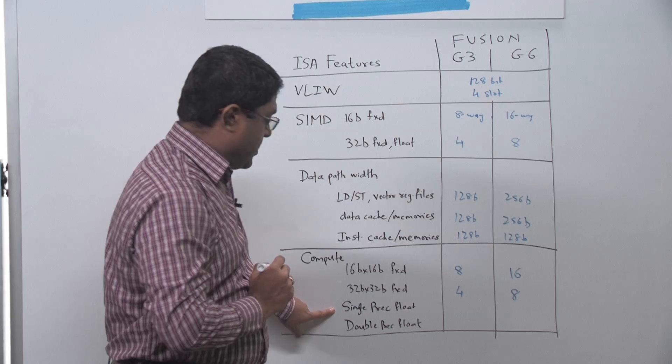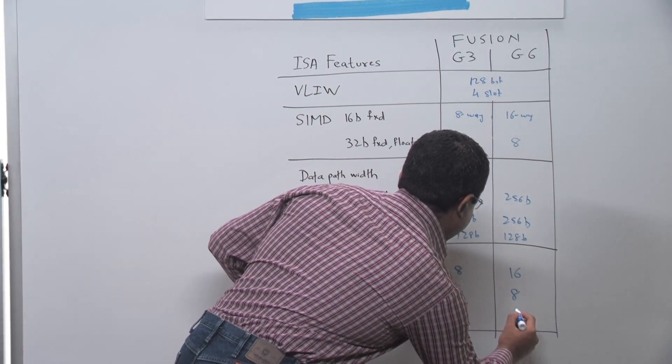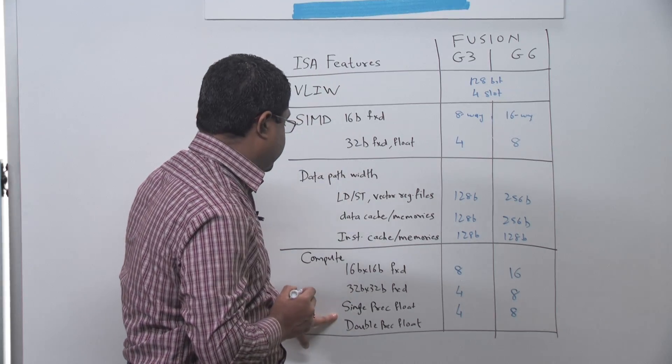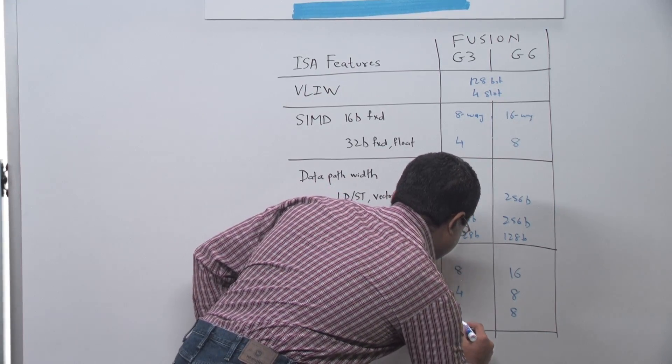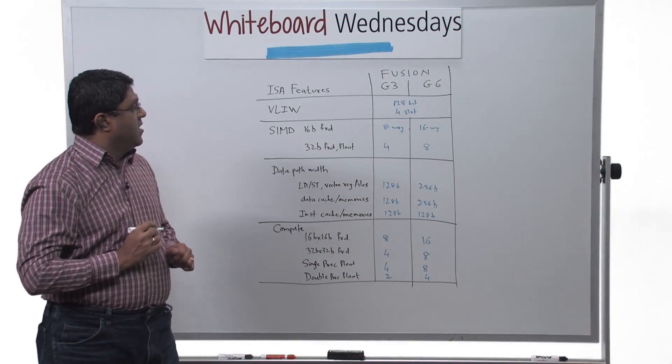Single precision floating point, 4 per cycle for G3 and 8 for G6 and double precision floating point, 2 per cycle for G3 and 4 for G6.